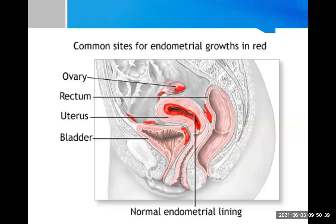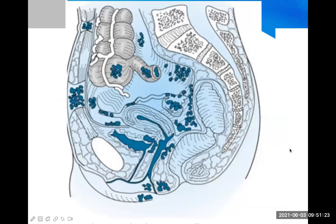This picture shows common sites for endometrial growth marked in red — the ovary, rectum, uterus, and the area between them called the pouch of Douglas. Endometrial tissue is also shown on the urinary bladder and anterior abdominal wall. The normal endometrial tissue is present inside the endometrial cavity; all other locations represent abnormal, ectopic presence.